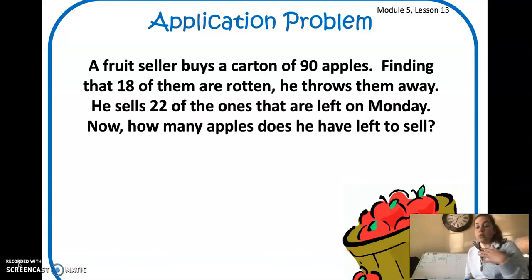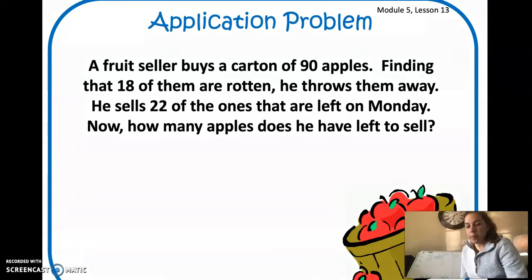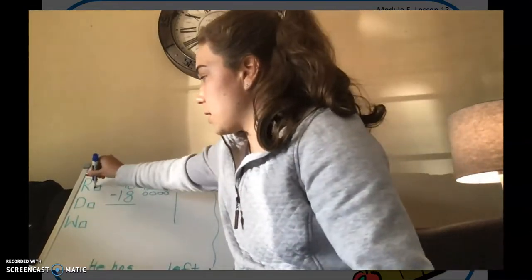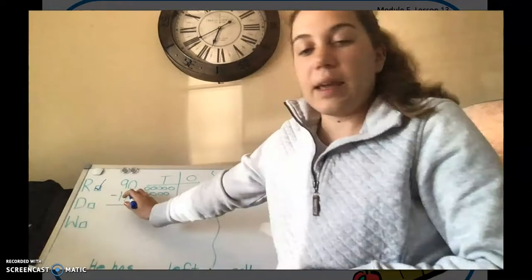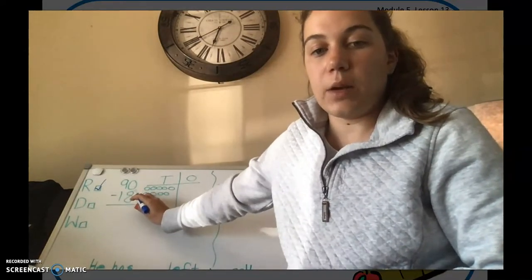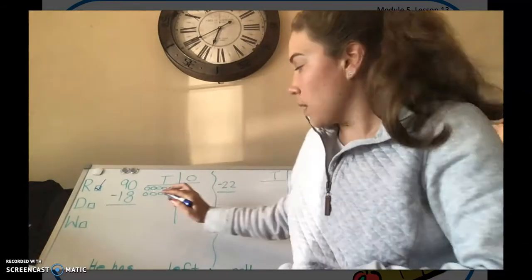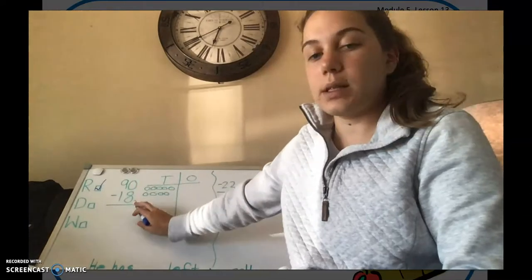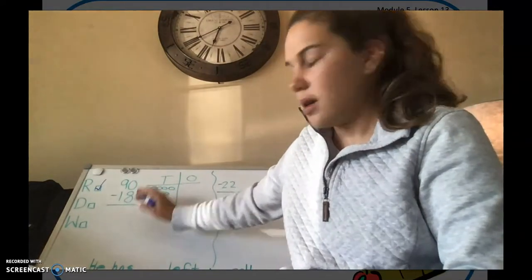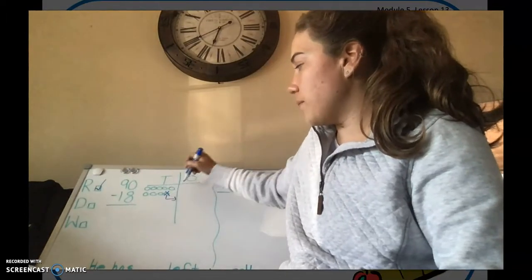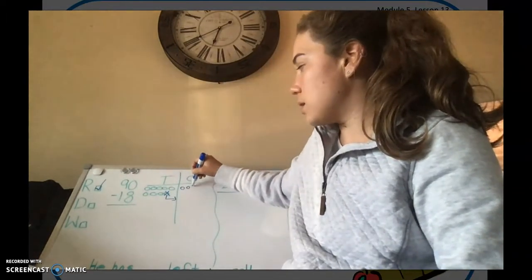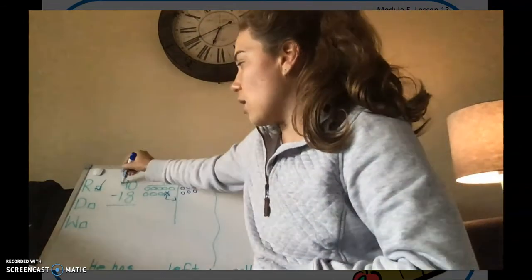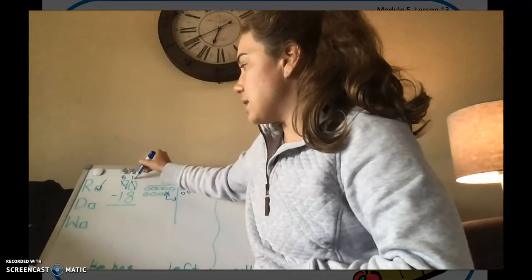So first we do 90 minus 18. So on my board I have my read, draw, write checklist. I'm going to check off the read because we've read our problem. And I have 90 minus 18 because of the 90 apples he started with and he threw out 18. So I have my place value chart here and I always start in my ones column. So I have 0 minus 8, but I can't do that. So I'm going to trade in 1 ten for 10 ones.